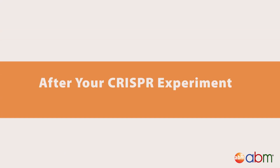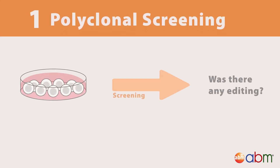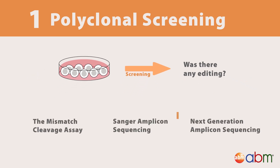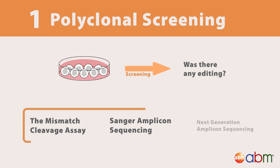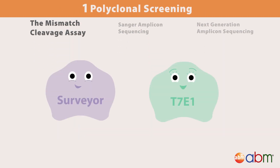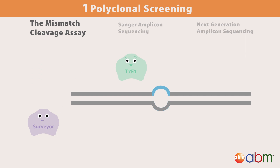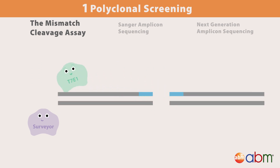After performing your CRISPR experiment, the first step is to screen your polyclonal pool of cells to see if any editing occurred. We recommend screening your polyclonal pool using either the Mismatch Cleavage Detection Assay or PCR amplicon sequencing. The Mismatch Cleavage Detection Assay can be performed using either Surveyor Nuclease or T7 Endonuclease I.